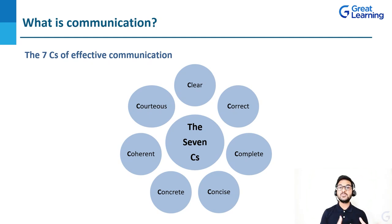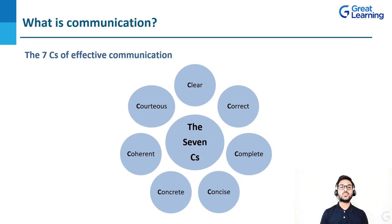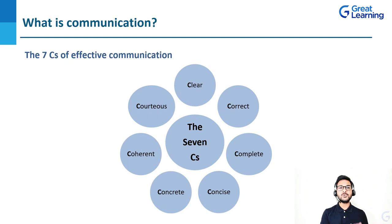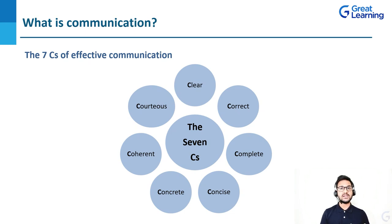Then concrete — whatever you are saying should be solid, it should make sense, it should impact the other person. You always have to define what exactly is the cause of whatever you are saying; defining that cause makes your communication very concrete and more effective. Then coherent — whatever you are saying should be coherent and easy to understand for the other person. You should always analyze the audience. If you are writing a mail to person A and then the same thing to person B, both mails should be different depending upon your audience, because each person is different and you have to communicate with both of them differently.